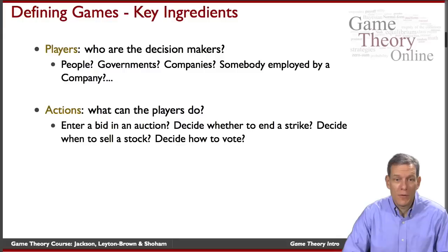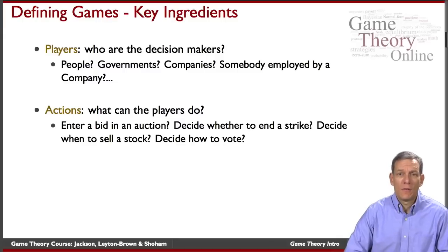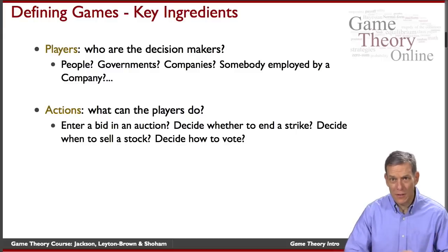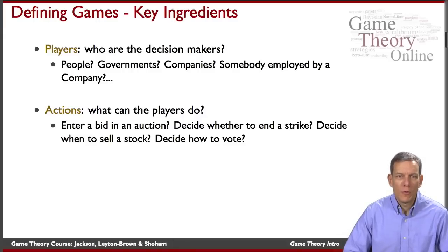Next we have to decide how we're going to model the actions. What actions can players actually take? Later in the course we'll be looking at auctions where they can enter bids. When we're talking about bargaining they might be deciding whether or not to strike. When we're thinking about investing, it could be that an investor is deciding how much of a stock to buy or sell, when to buy or sell it, how they should react to other people in the market, how they should be conditioning their decisions on prices. When we're thinking about voters, how do they vote? We'll want to be careful in making sure that we have the essential actions modeled.